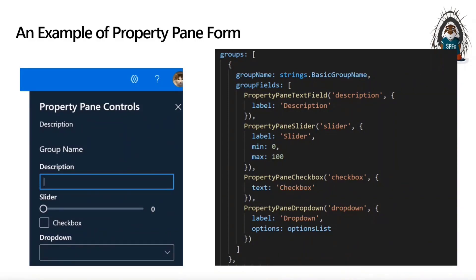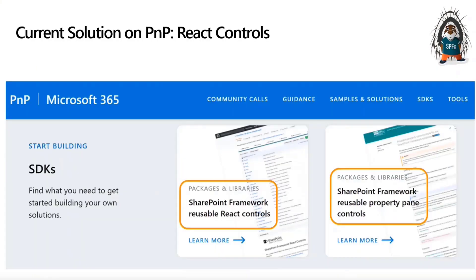What Microsoft offers is the ability to create custom controls through an extensibility model available within the property pane. Simply, if you start using it, you'll see it's not very straightforward — it takes some time to get into it. I'd be interested to hear how you deal with that: when you have a need for custom controls, how do you build and insert them in the property pane?